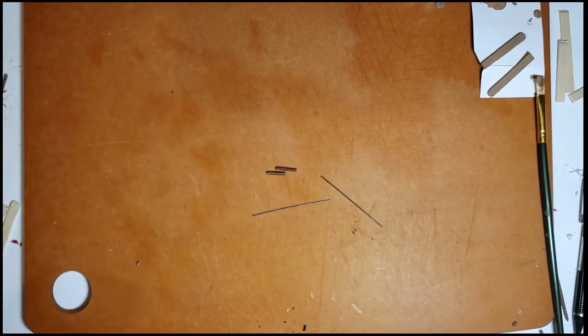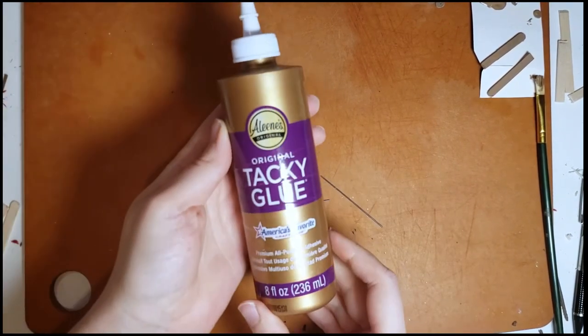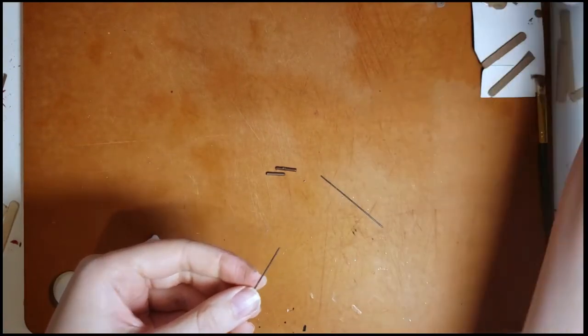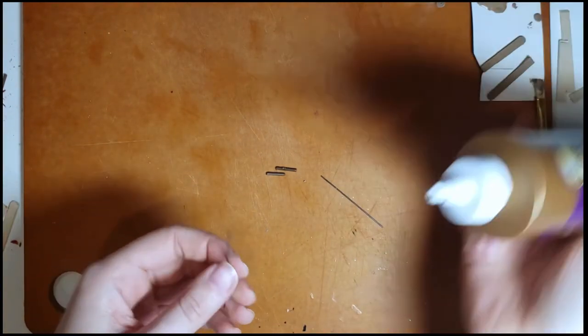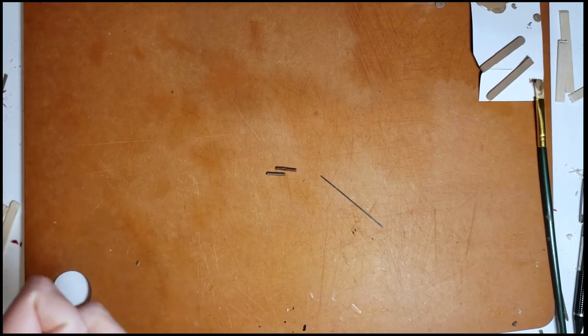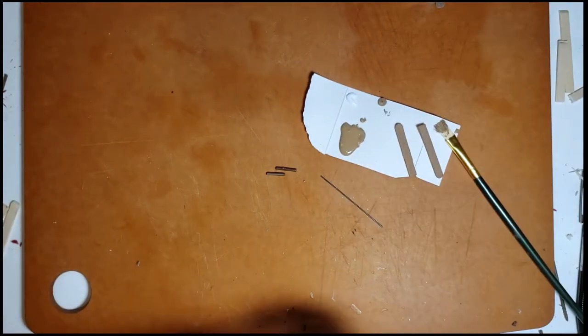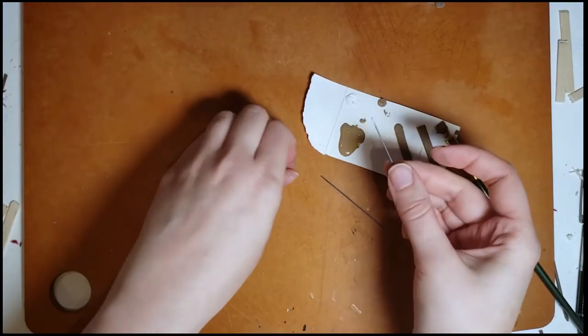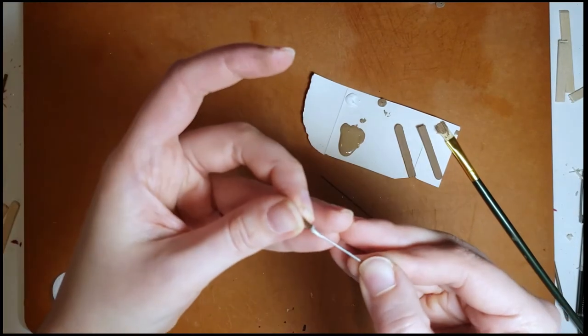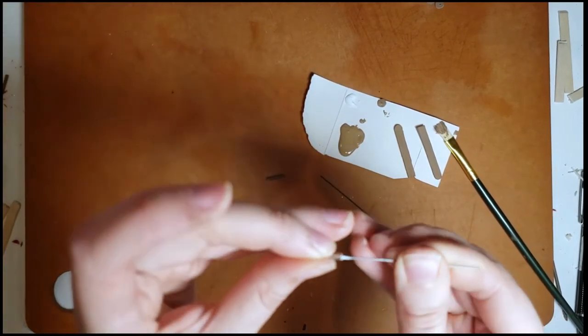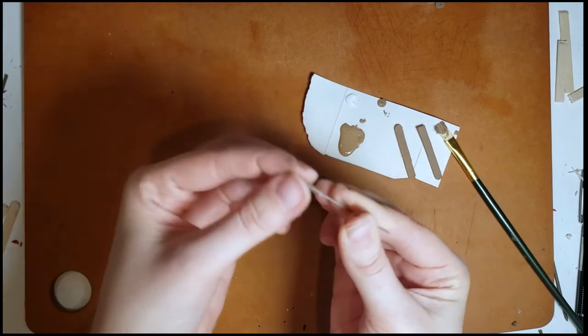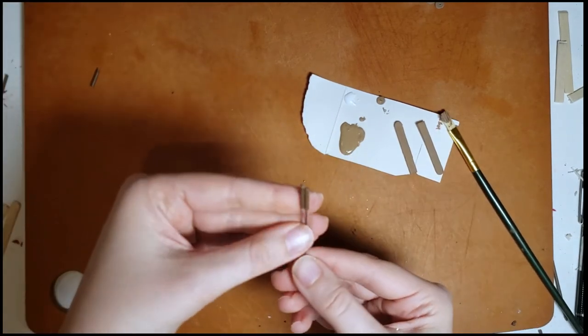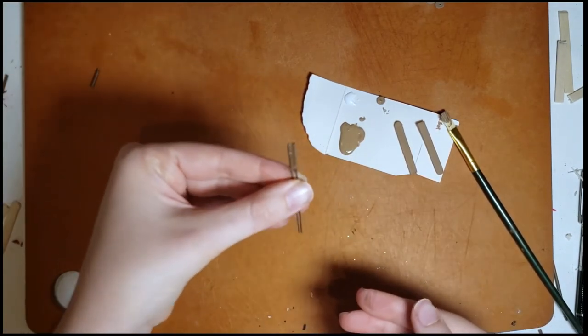So I just take a little bit of my tacky glue and I usually put it out on a piece of cardstock or glass and I'm just going to dip my wires into it and reinsert them. You might find that a few pieces don't want to work so it's always best to have a few extras just in case.